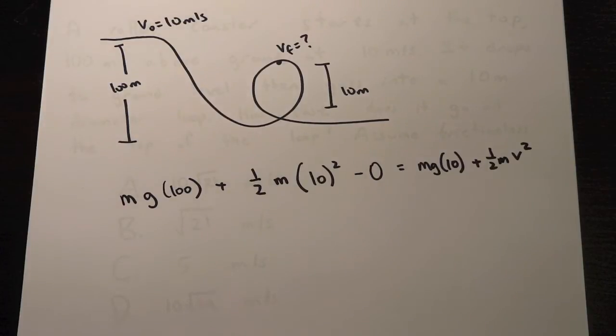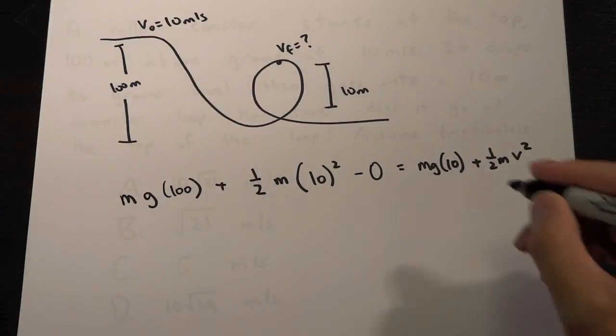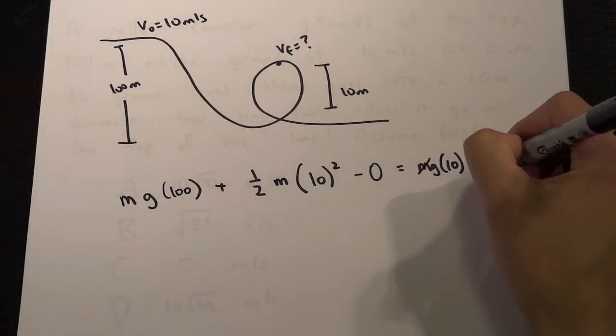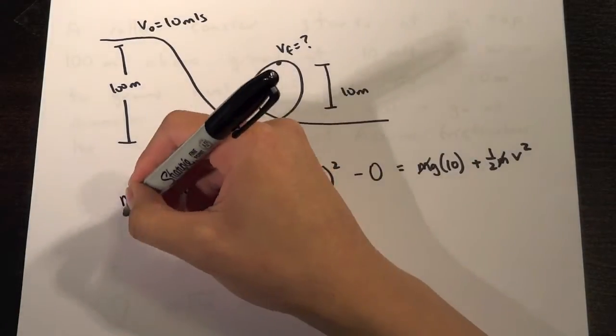So you may ask, did it matter if we knew the mass of the cart? Did it make a difference? Did it matter how many people were on there? So the answer is no. Because we see that there's an M in every single term. We don't even need to worry about the M.